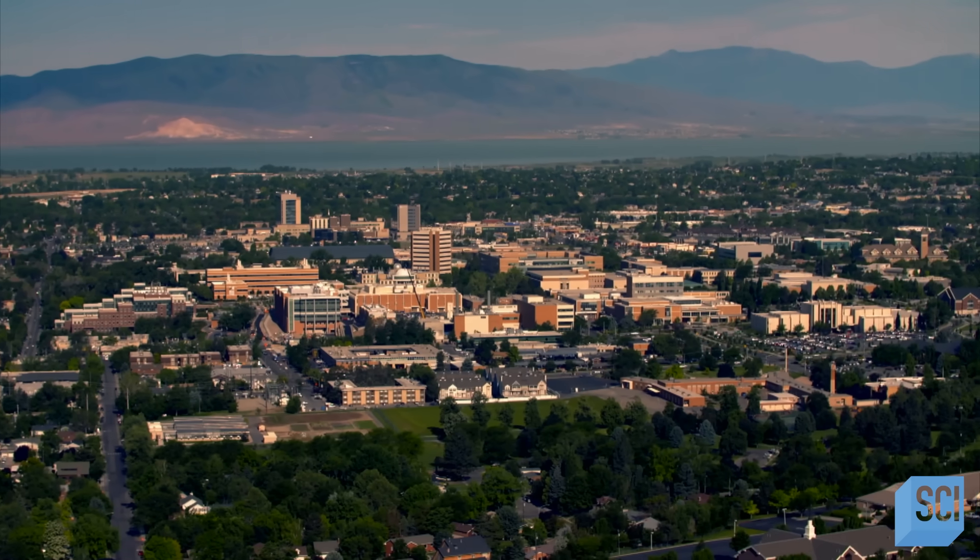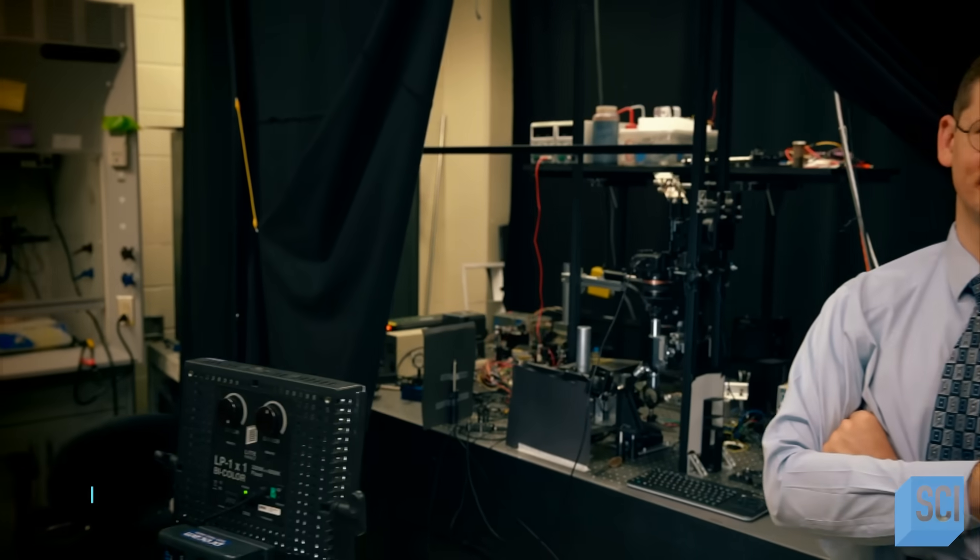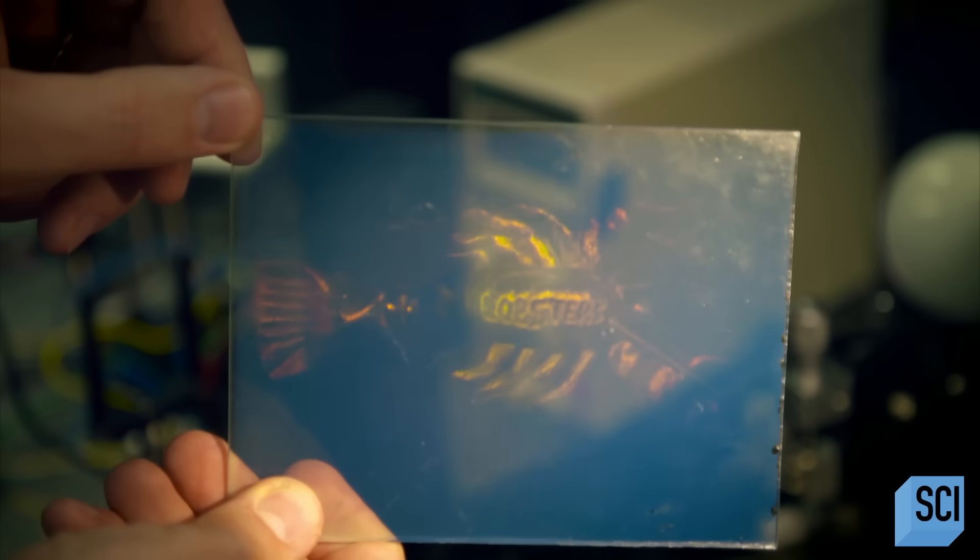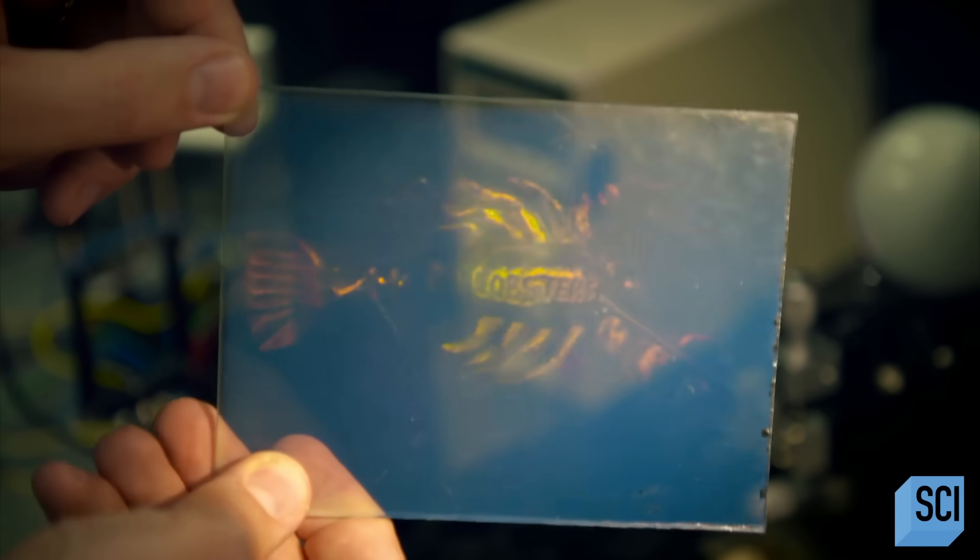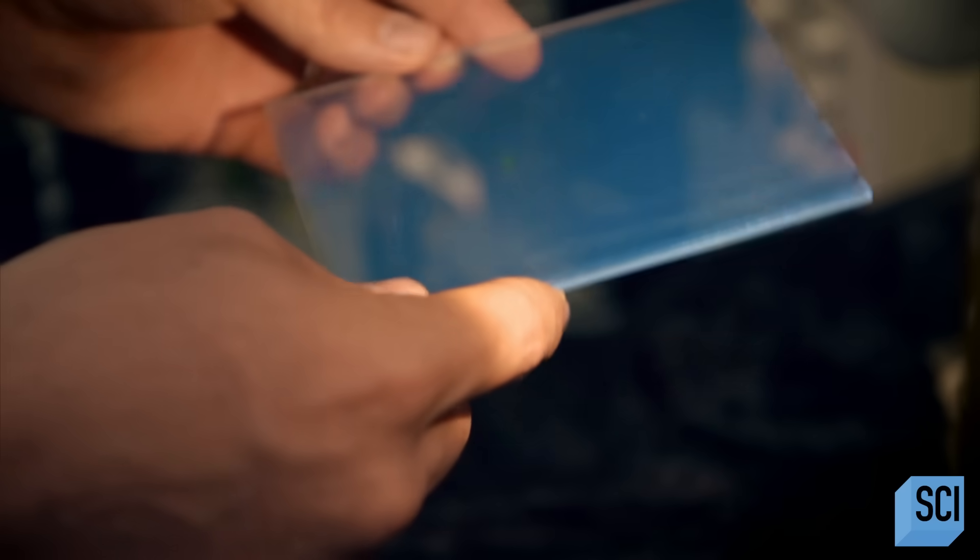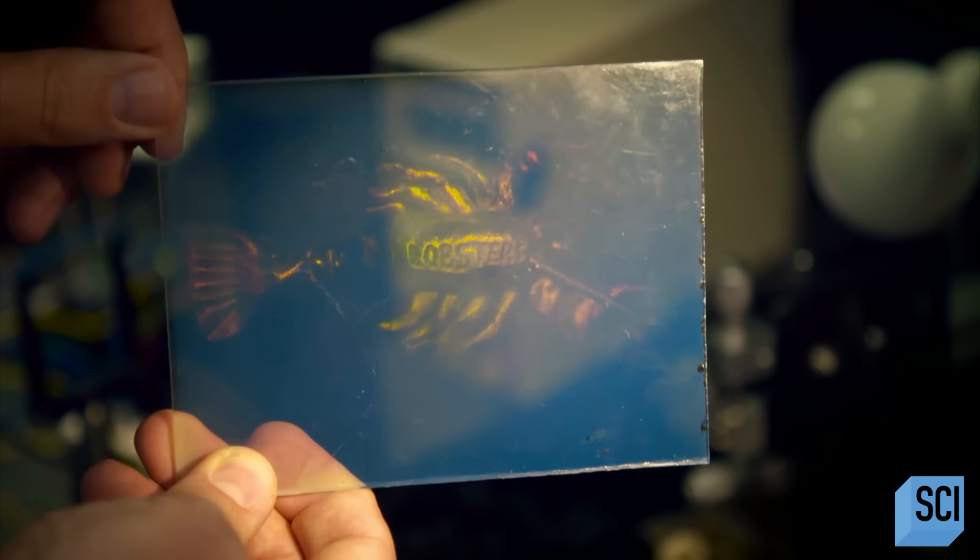In the city of Provo, Utah, physicist Daniel Smalley uses a practical approach to investigate this mystery. He builds holograms from scratch in his lab. The magic of a hologram is that it contains the 3D information for a volume in a 2D surface. Here we see that the 2D pattern of lines is actually recreating a three-dimensional image that appears to be behind the plate.